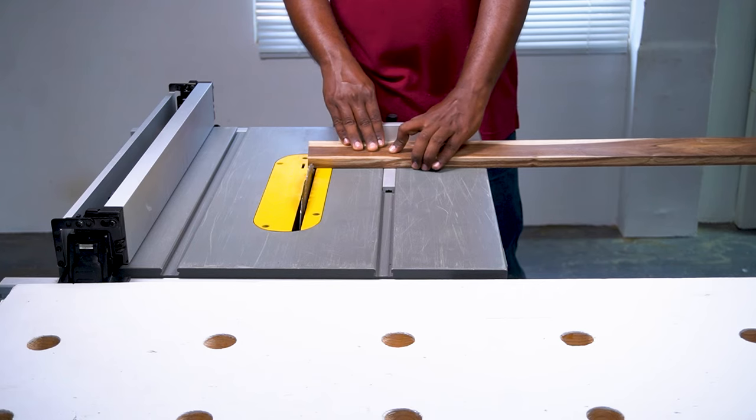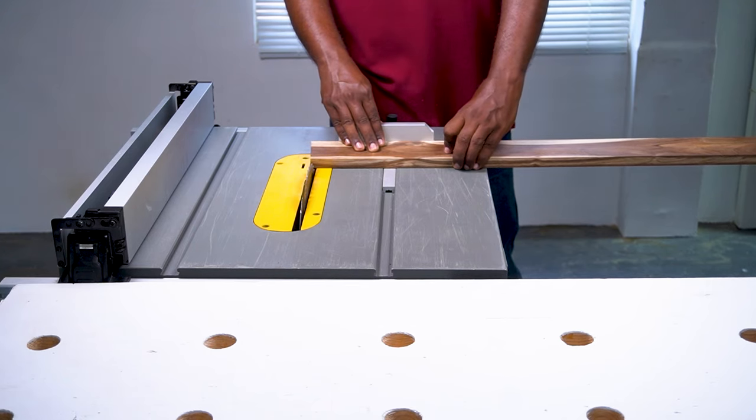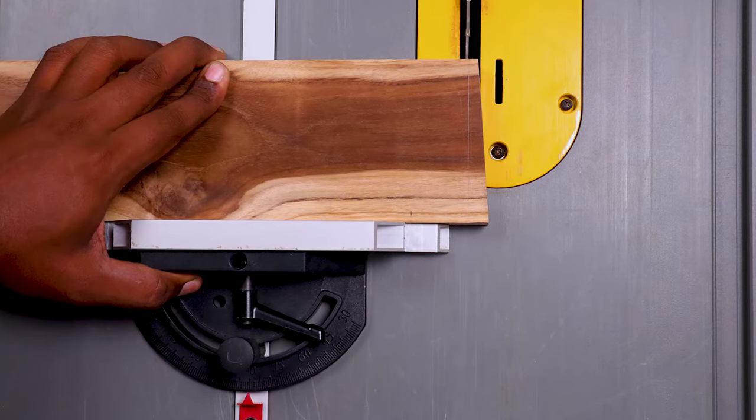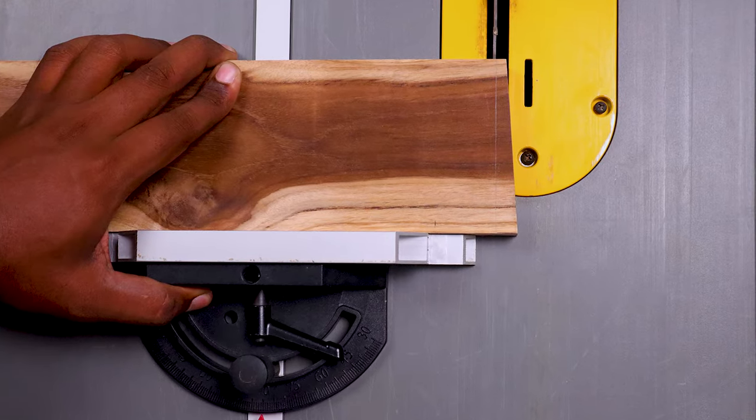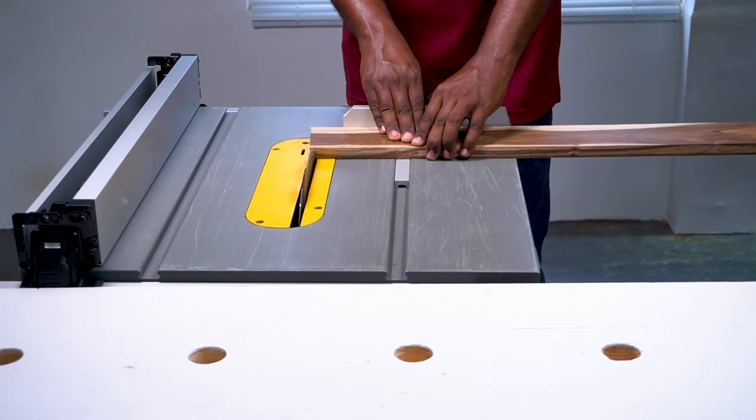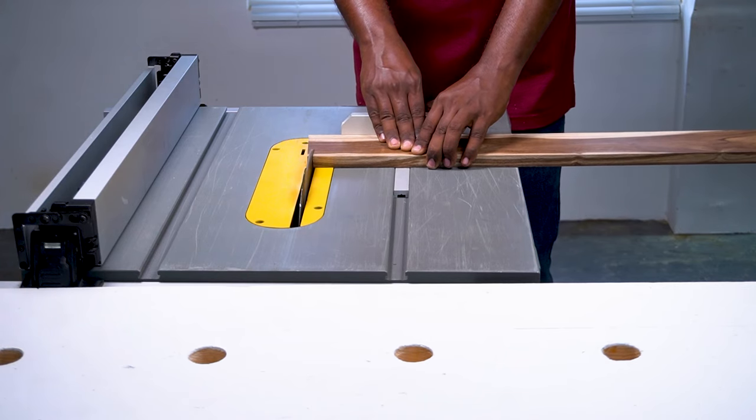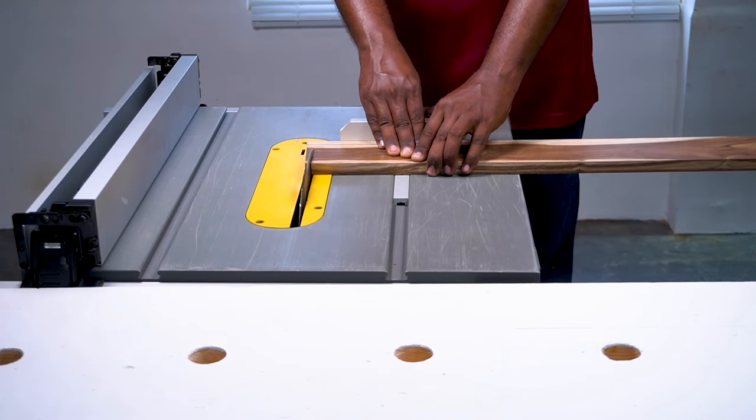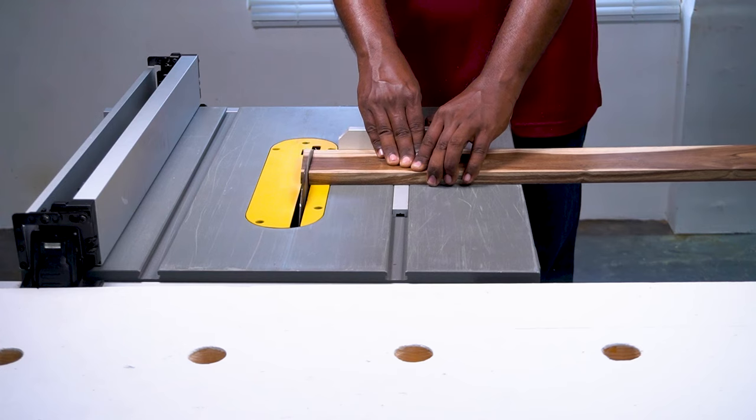Align the blade with the cut line marked in the previous step. Cut along the line using the table saw. Remember to grip the board firmly along with the miter fence. It's actually safer to do this cut with a crosscut sled. Now that you have successfully squared one short edge.